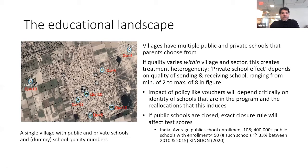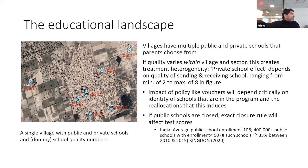In this village, you don't want to close the government school with a quality of 10. If you want to close a school, you want to think about the one with quality 4. Is this school closure thing going to be important? Yes. In India, Gita Kingdon has this amazing paper showing that the average public school enrollment is now 108 kids. There are 400,000 public schools with enrollment less than 50 kids. In a way, that's remarkable — the government really did say, even if you're in a tiny settlement, I'm going to make sure you get a school, and that's partly responsible for the massive expansion in access.